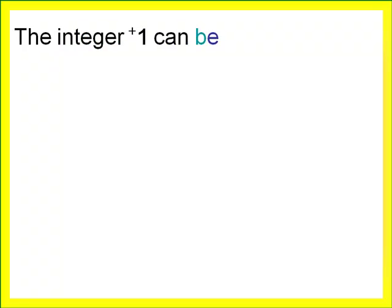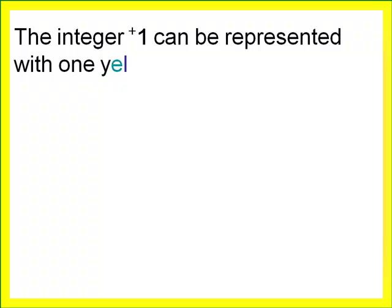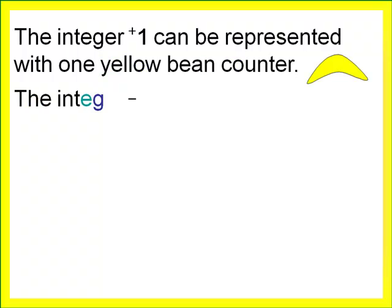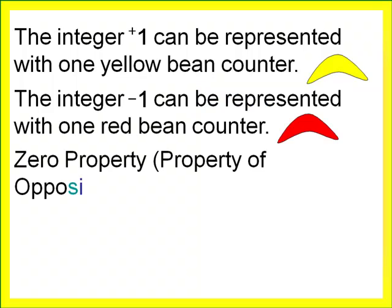In our first videos, we learned that the integer positive one can be represented using one yellow bean counter, and that the integer negative one can be represented using one red bean counter.